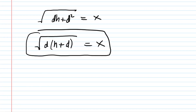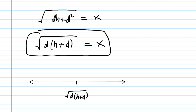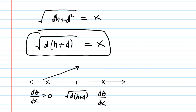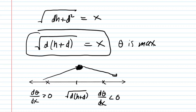If your teacher wants extra work to prove this is a maximum, you would do a first derivative test: plot the critical number on a number line, pick a test point to the left and one to the right. Show that dθ/dX is positive (theta increasing) to the left and negative (theta decreasing) to the right, confirming a maximum. So theta is maximized at X equal to the square root of D times (H plus D).